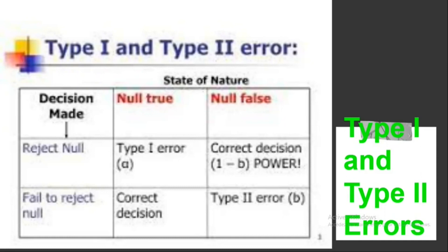Type 2 error: occurs when the sample does not appear to have been affected by the treatment when in fact the treatment does have an effect. In this case the researcher will fail to reject H0 and falsely conclude the treatment has no effect. Type 2 errors are commonly the result of a very small treatment effect — although the treatment does have an effect, it is not large enough to show up in the research study.